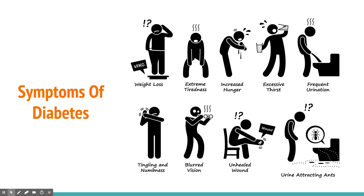Bacteria inside wounds feed on the glucose in the bloodstream, allowing them to proliferate so the wound doesn't heal despite antibiotics. As an anecdotal note, urine attracting ants was one of the earliest signs used to diagnose diabetes — individuals with high blood glucose were passing glucose in their urine, which attracted ants, and that is how diabetes was first discovered.